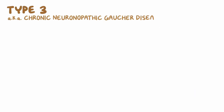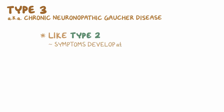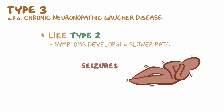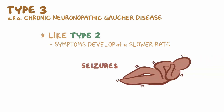Lastly, type 3, also called chronic neuronopathic Gaucher disease, is like type 2, but the symptoms develop at a slower rate, and in some individuals, they can develop over decades. Seizures can be a major problem for some individuals with type 3 Gaucher disease.